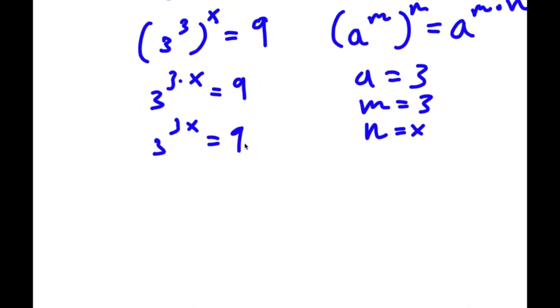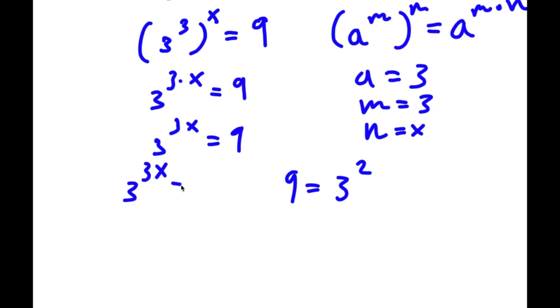Now 9 here is the same thing as 3 squared. So I have 3 to the power of 3x is equal to 3 squared.